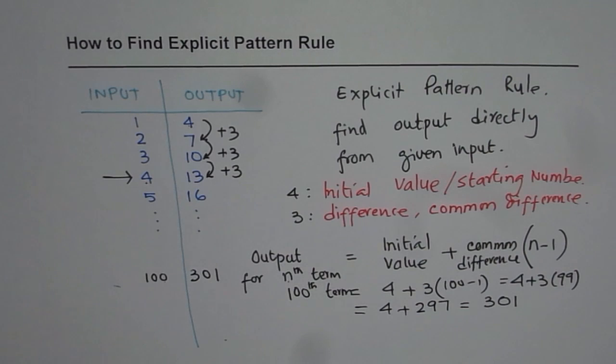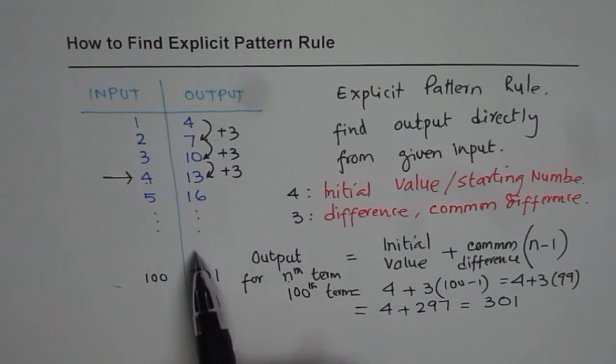So that is how we can find the output using explicit formula. That is a good way and a faster way of finding the output directly from the input. In this case we do not have to calculate the 99 numbers in between. I hope that helps. Thank you.